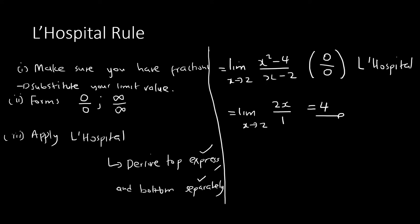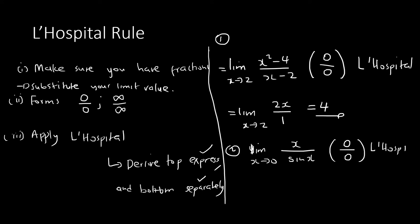Let's do another example: limit as x→0 of x / sin(x). First substitute: top gives 0, bottom gives sin(0) = 0. That's zero over zero, so apply L'Hôpital. Differentiate the top: 1. Differentiate the bottom: cos(x). Substitute 0: top is 1, cos(0) = 1, so the answer is 1/1 = 1.